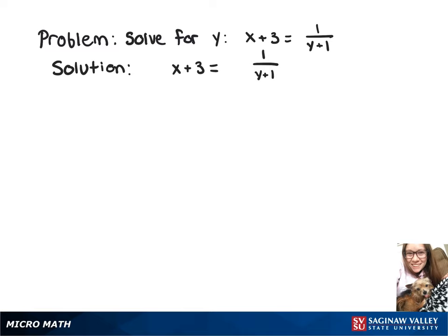We want to solve for y in the equation x plus 3 equals 1 over y plus 1. We'll start by multiplying both sides by y plus 1.